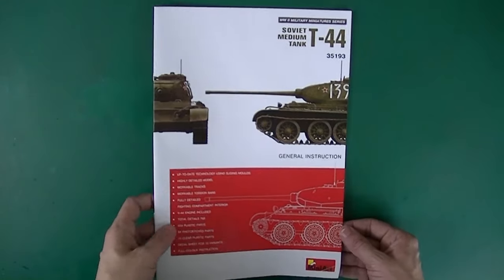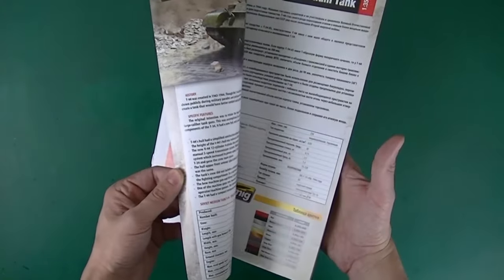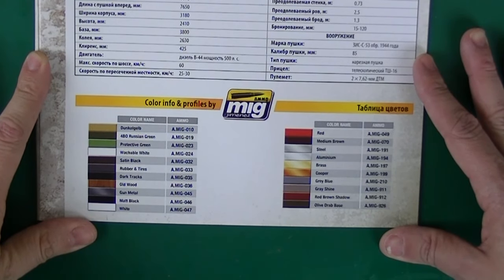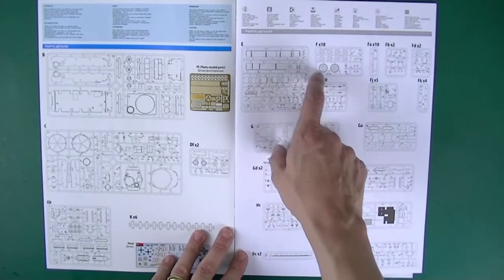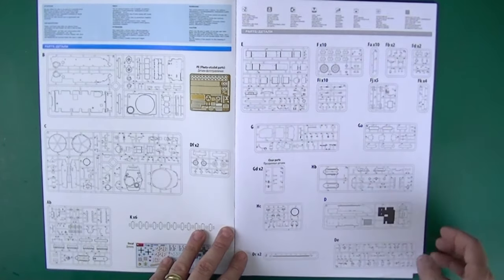The instruction book is a full color proper booklet. There are quite a few pages and quite a few steps here. Color call outs are MIG ammo which is interesting. The sprue map is quite large you can see quite a few sprues some of these things like F times 10, FA times 10, quite a few duplicate sprues.